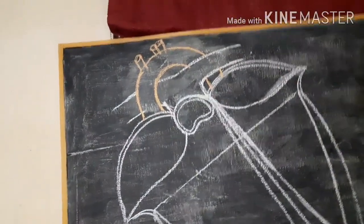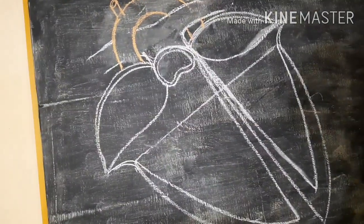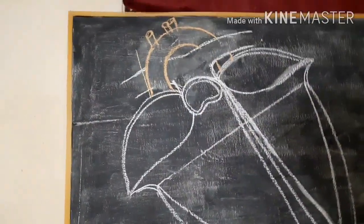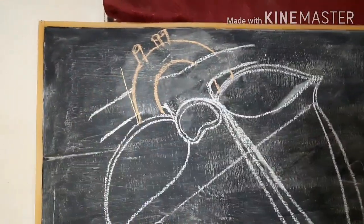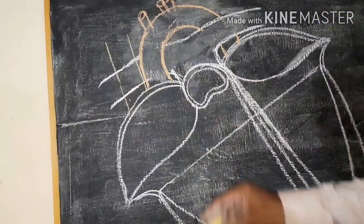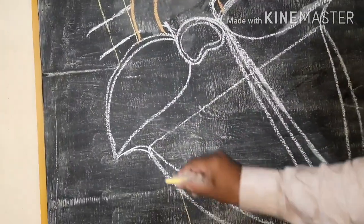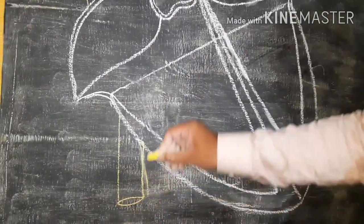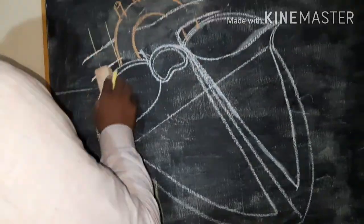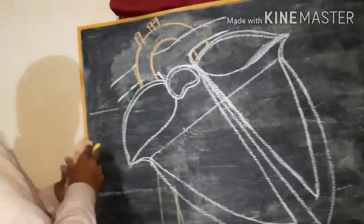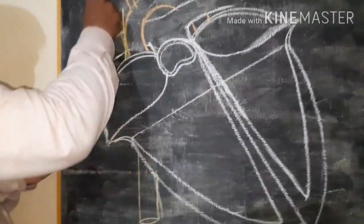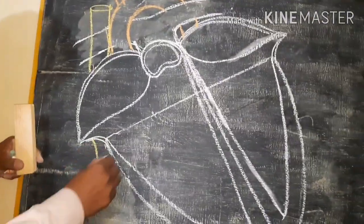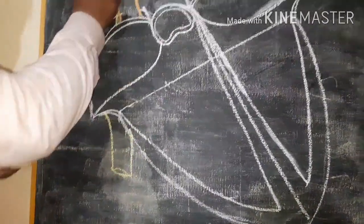Now, what about the caval veins — we have to draw the caval veins. See, we have to draw caval veins like this; the same caval veins continue like this. This is your superior vena cava and this is your inferior vena cava.